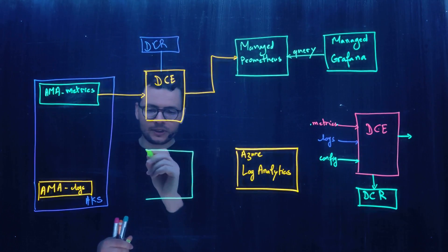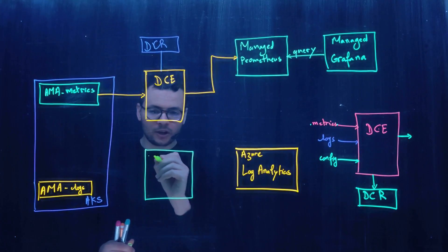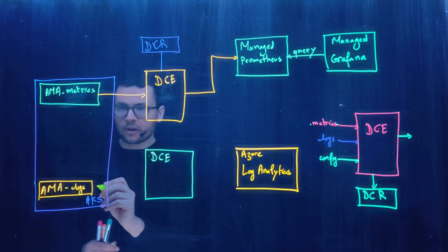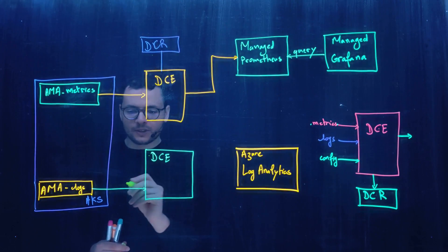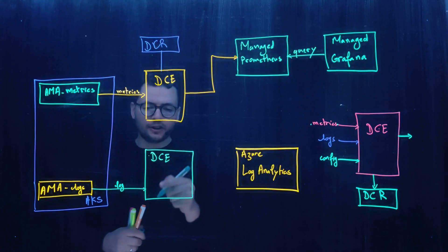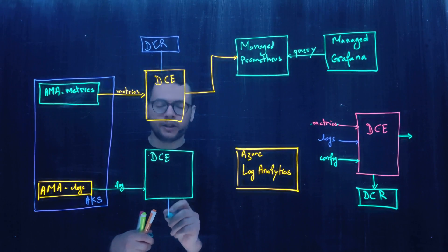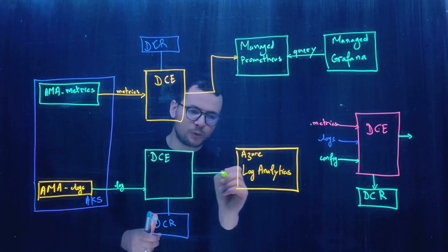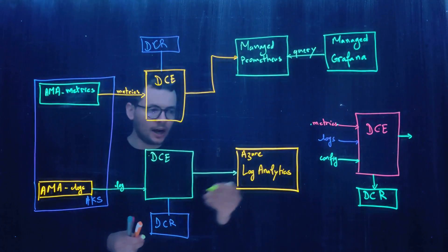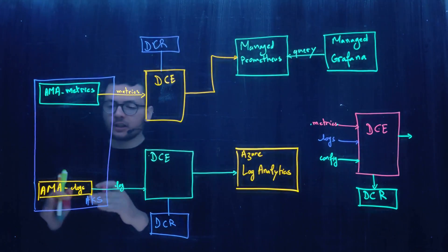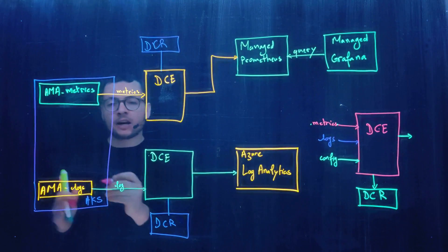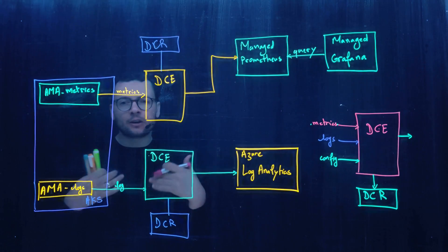The same flow applies to cluster logs. A DCE data collection endpoint sits between the monitor agent and Log Analytics. The Azure Monitor agent sends logs to this data collection endpoint, which in turn uses a DCR to transform and filter the data before sending the logs to Azure Log Analytics. This covers the worker nodes of the cluster collected through the Azure Monitor agent.